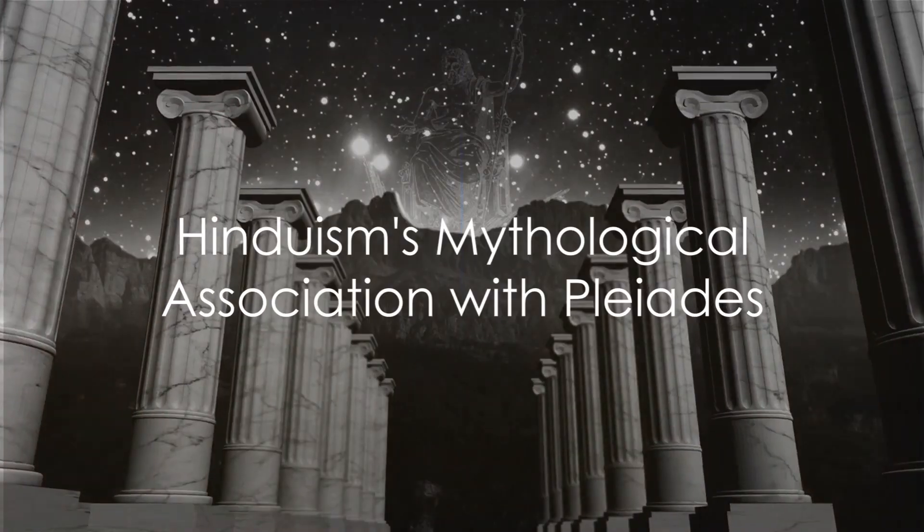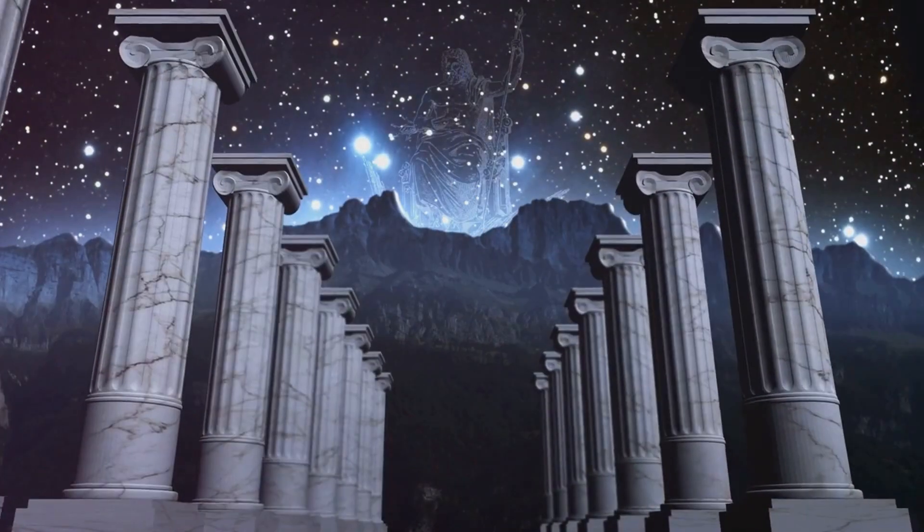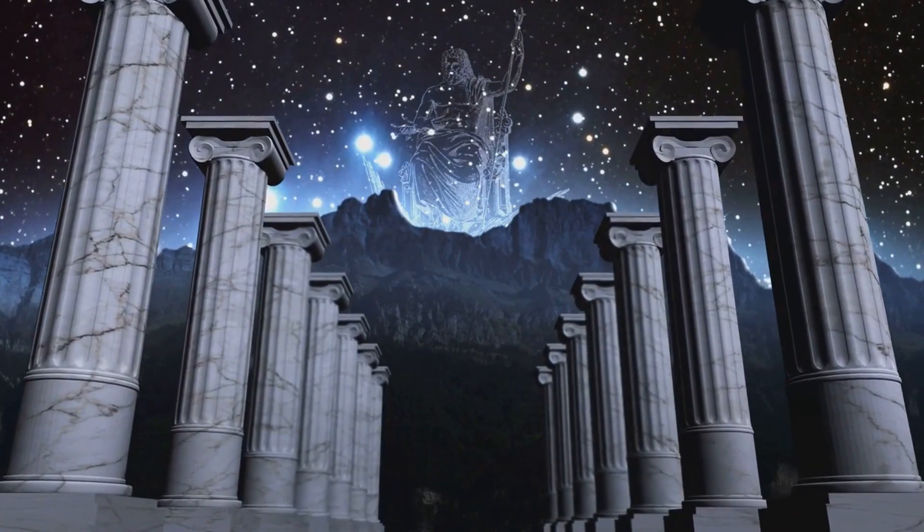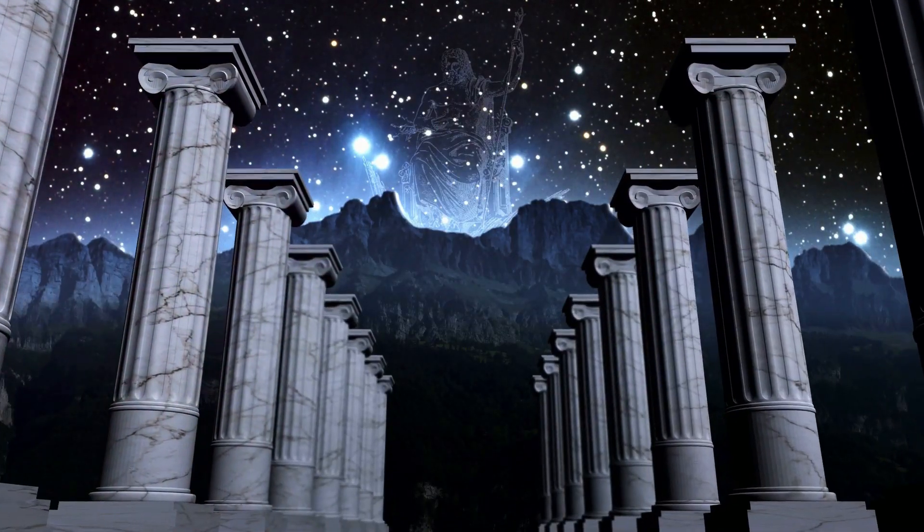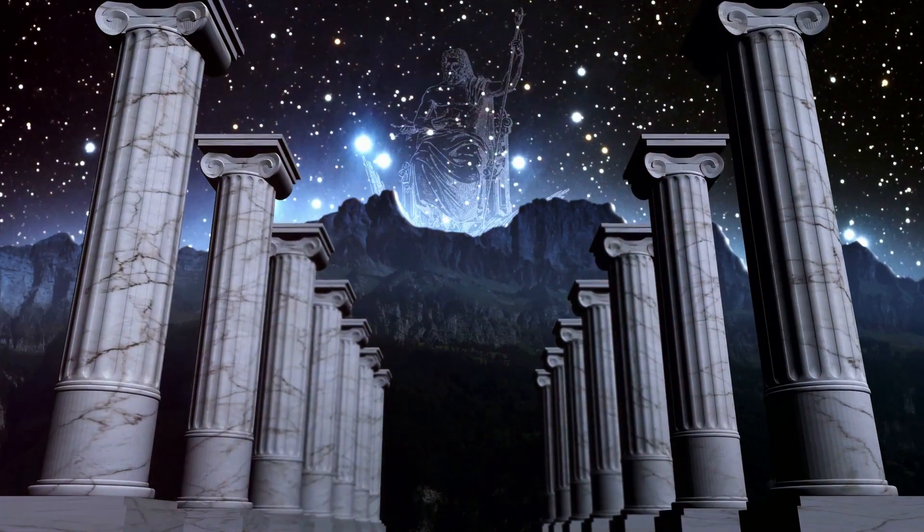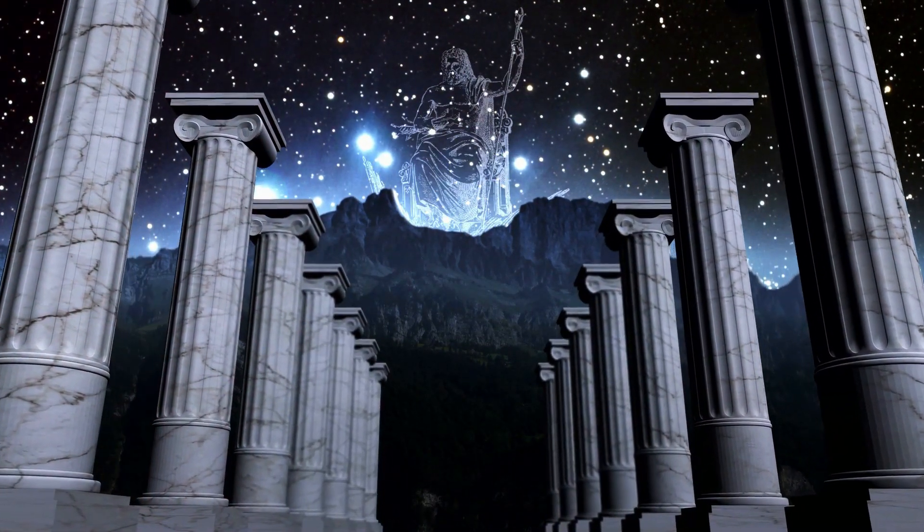Hinduism brings a different perspective, filled with rich mythology, where the Pleiades, or Kritika, play a significant role. In the Hindu pantheon, the Pleiades are personified as the six celestial mothers of Kartikeya, the god of war.